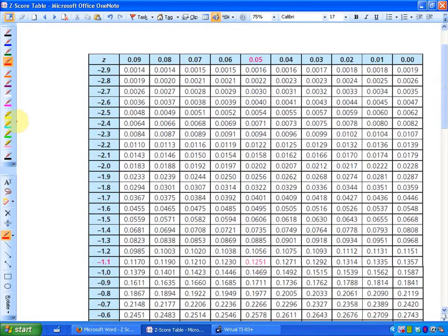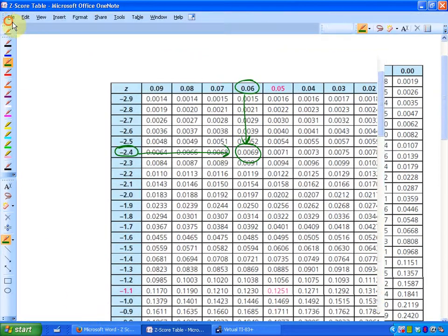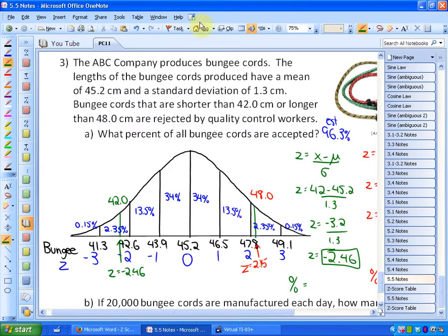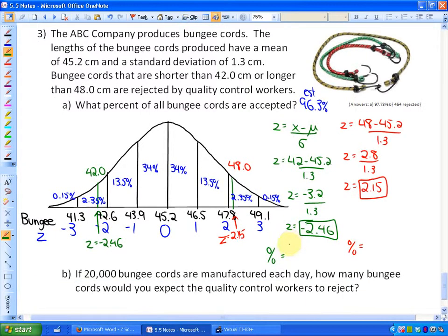So here we go. Negative 2.46. Here is negative 2.4. Here's 0.06. And that looks like it would be 0.0069, or in other words, 0.69%. So it's 0.69%. So that means that 0.69% are below 42 centimeters.